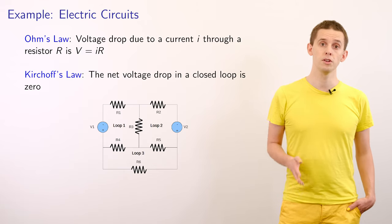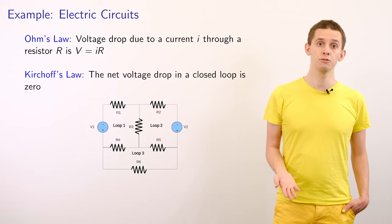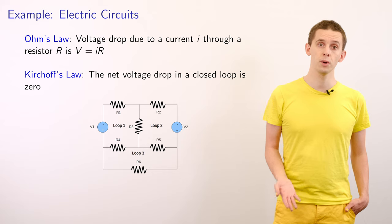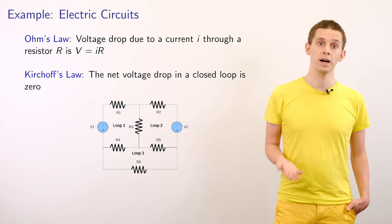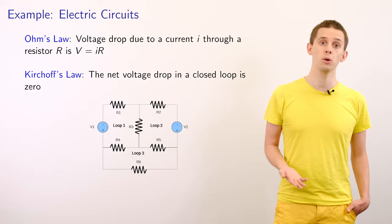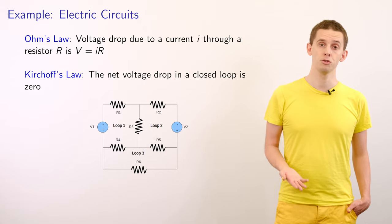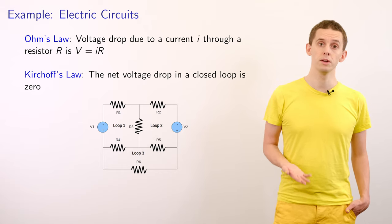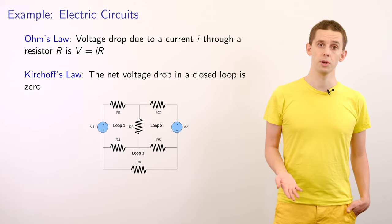So our first example is taken from electric circuits. And here, we can make use of two fundamental laws. Firstly, Ohm's law tells us that if we have a resistor with resistance R and current i flowing through it, then the voltage drop across that resistor is given by V = iR. Kirchhoff's law tells us that the net voltage drop around any closed loop is zero.